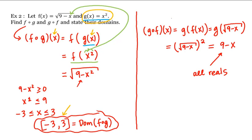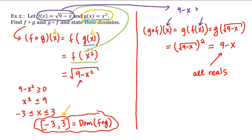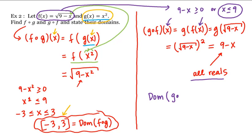However, whatever we're plugging into this composition has to be in the domain of the inside function. Looking at f, we need 9 minus x to be greater than or equal to 0, or x to be less than or equal to 9. So we need to exclude any real number that doesn't satisfy this inequality. The domain of g composed with f is the interval from negative infinity up to 9. And this is how we work with compositions and their domains.